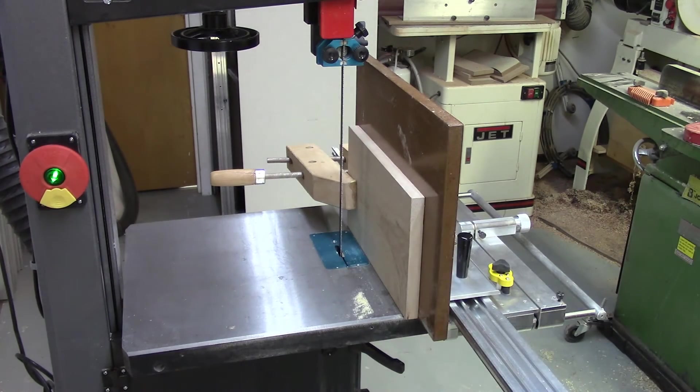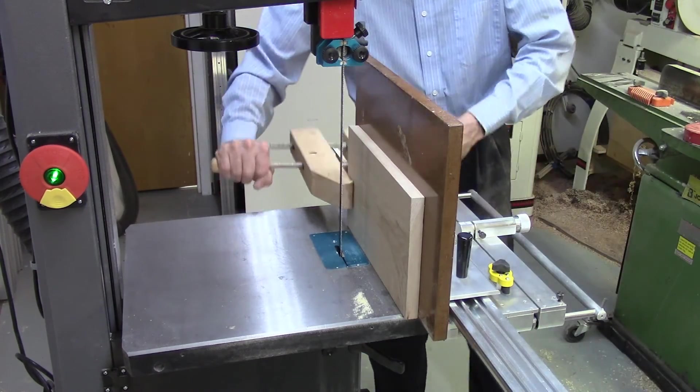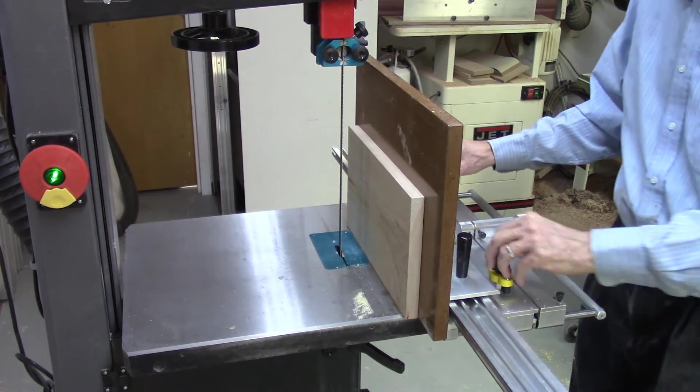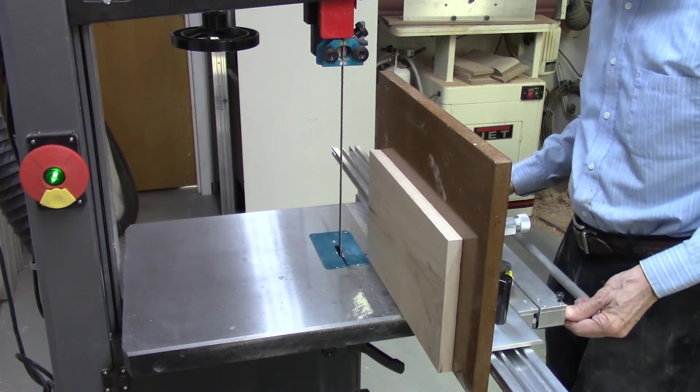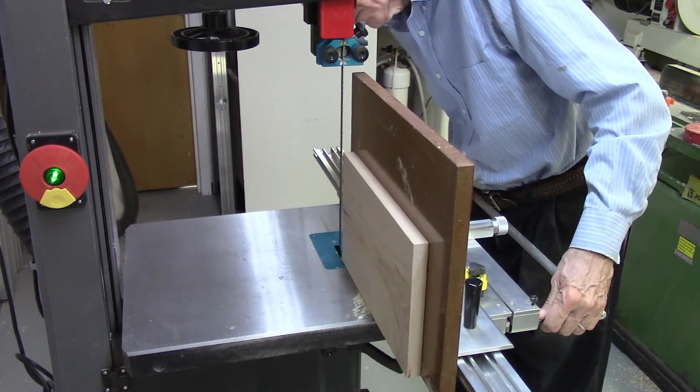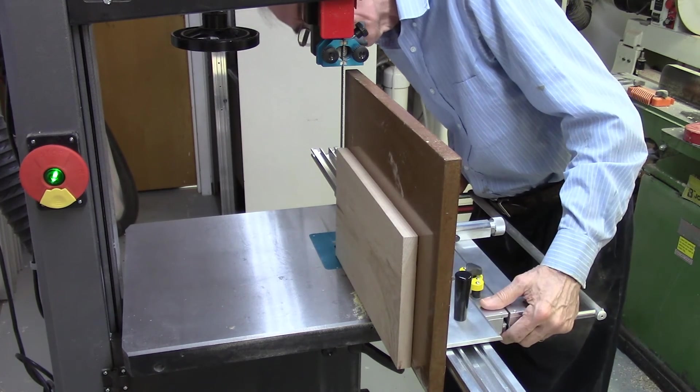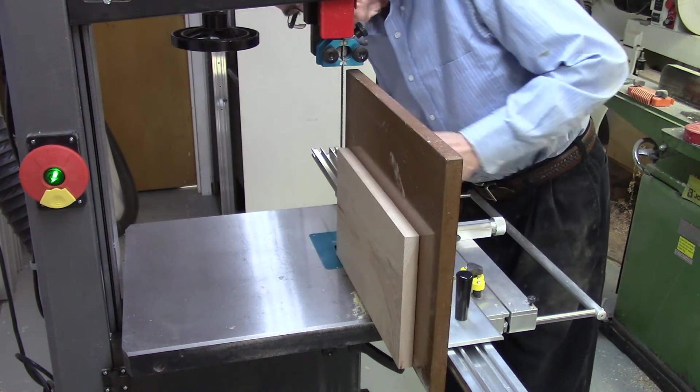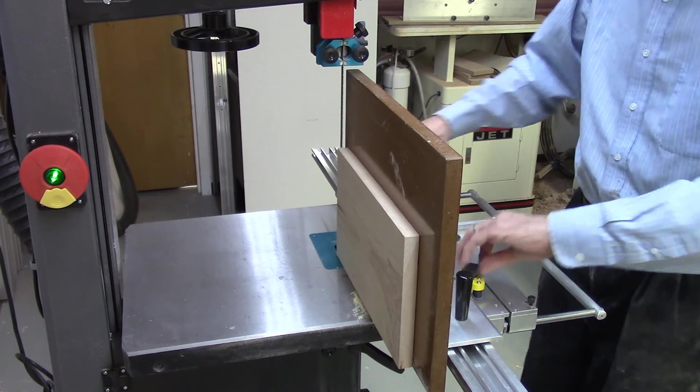Remove the clamps. Now I am just estimating where the center of the board is, so I just want to cut it approximately in half, and we can run it to the planer later.